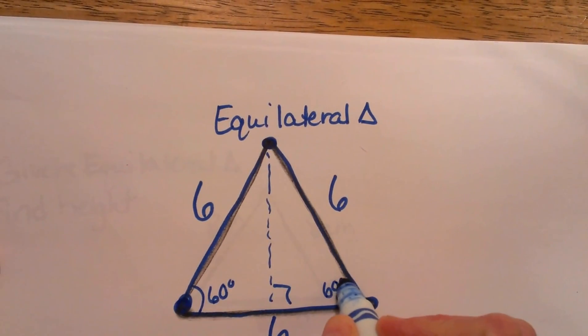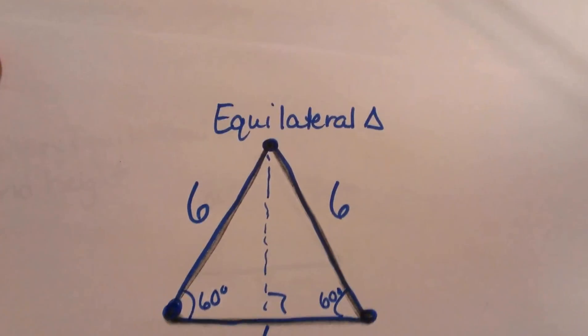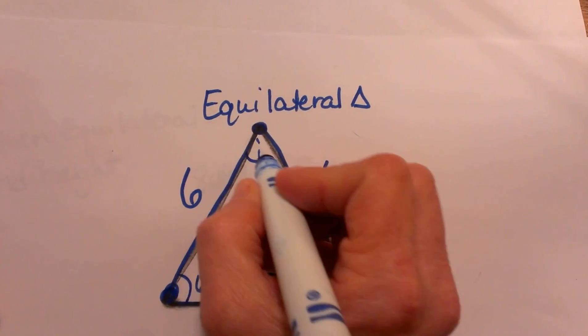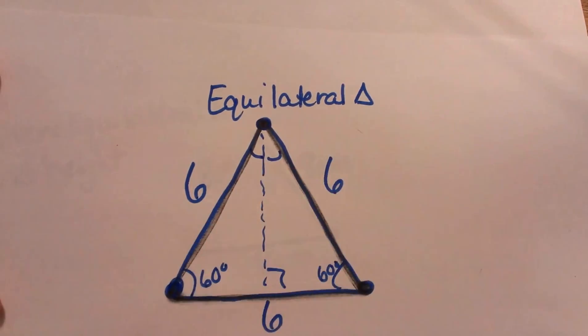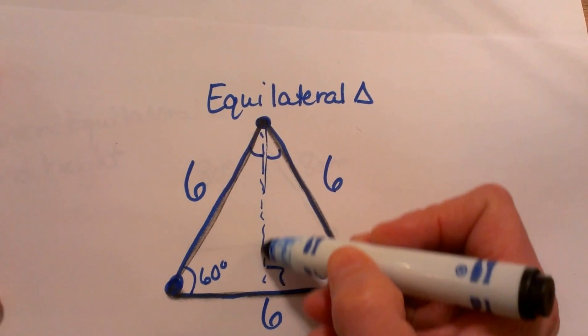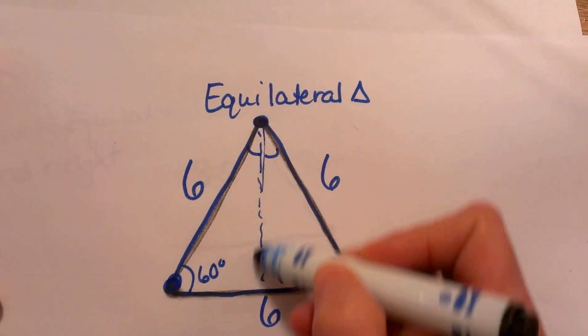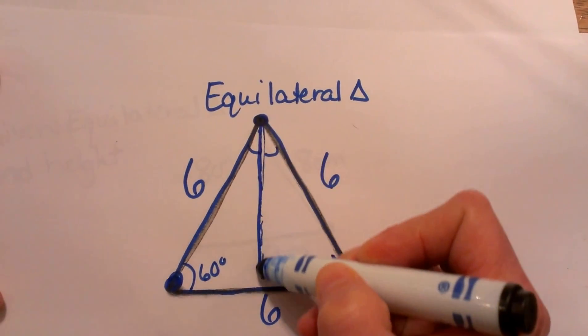So when I draw in the height from the apex up here, it actually takes this triangle and cuts it into 2 30 degree angles, so we have a 30-60-90 right triangle over here on this left side.